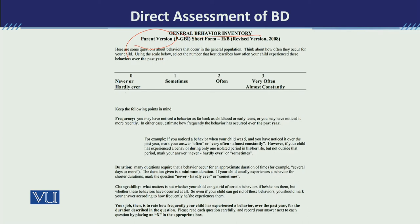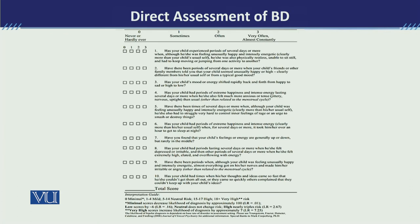Now for the Parent General Behavior Inventory: the response scale is 0 for never, 1 for sometimes, 2 for often, and 3 for very often or almost constantly. For items 1 to 10, the parent will read each item and provide their response on this scale.